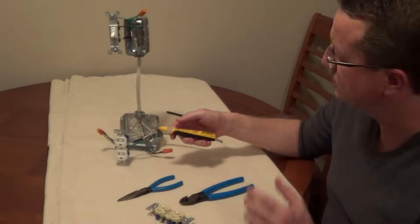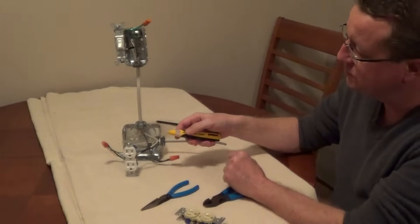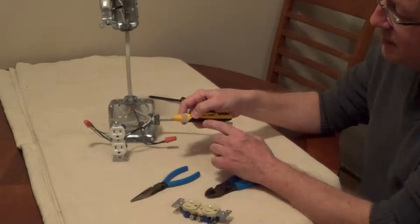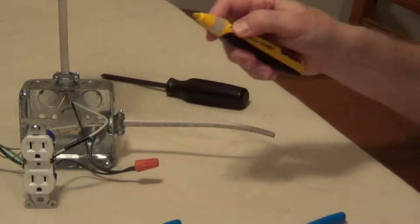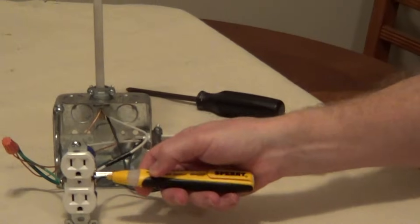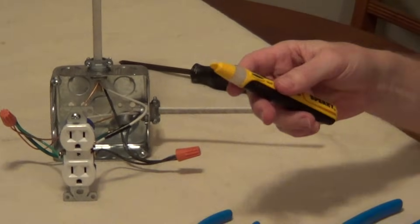I like a non-contact tester. What I like about it is you have to depress it to turn it on. It shows you a light that it's working and it also gives you a chirp. And then you don't actually have to touch the wires so that you know whether the electric's on or not.